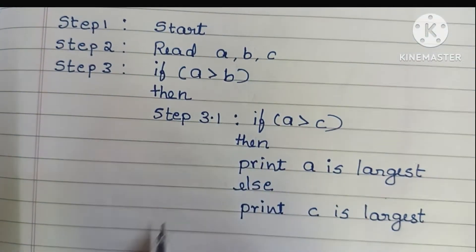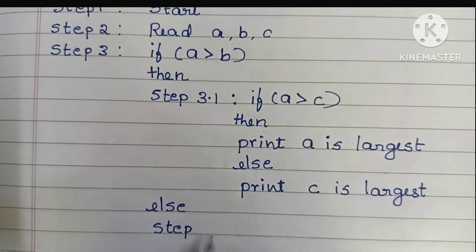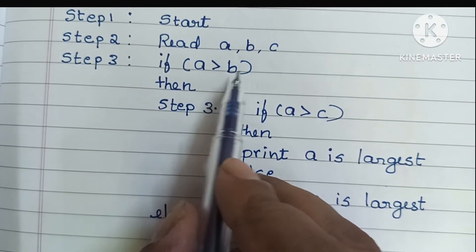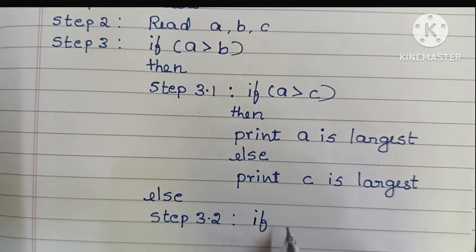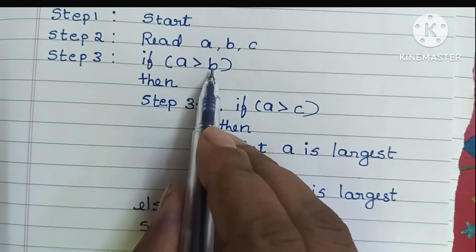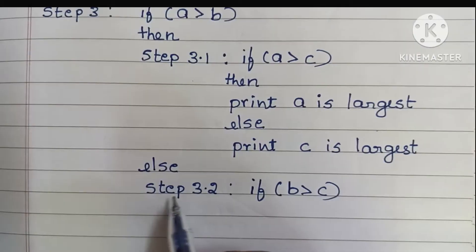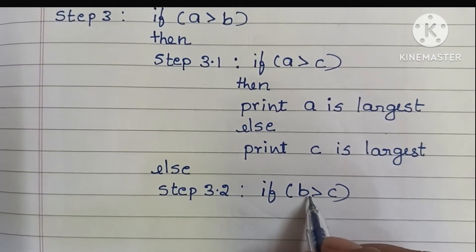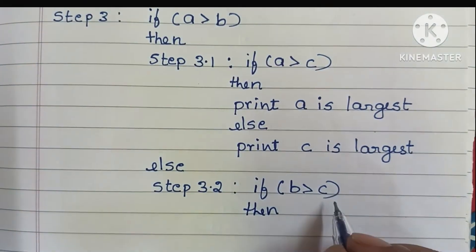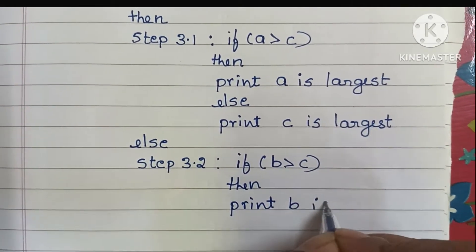If a greater than b is false, we execute step 3.2. If a greater than b is false, it means b is greater. So next we have to check b with c. In step 3.2, if b is greater than c, then b is greater than both a and c, so we print b is largest.